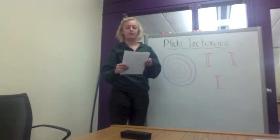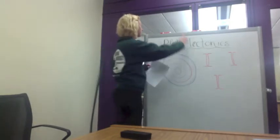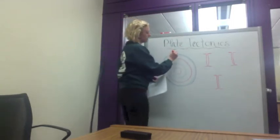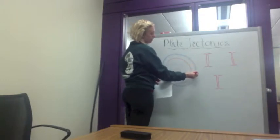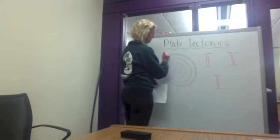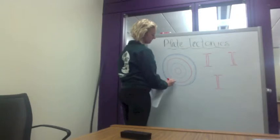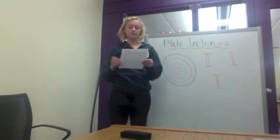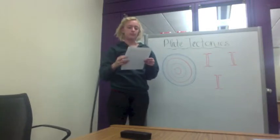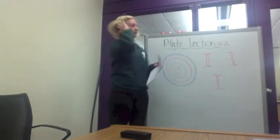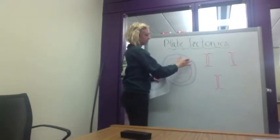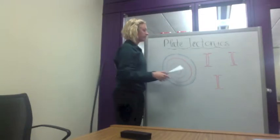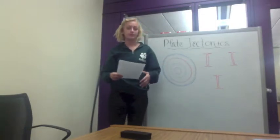Now that we know about the layers of the Earth, we can dive into plate tectonics. The upper part of the Earth, known as the crust, is divided into seven or eight major sections, known as the lithosphere. When these sections come together, they create boundaries, of which there are about three different types that we're going to discuss.